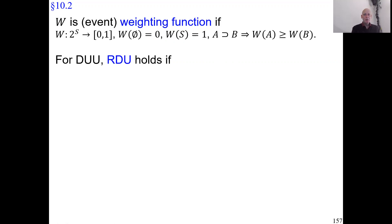So with that preparatory definition, I'm going to define rank-dependent utility for decision under uncertainty. By the way, rank-dependent utility is another name for Choquet expected utility. They mean the same thing.